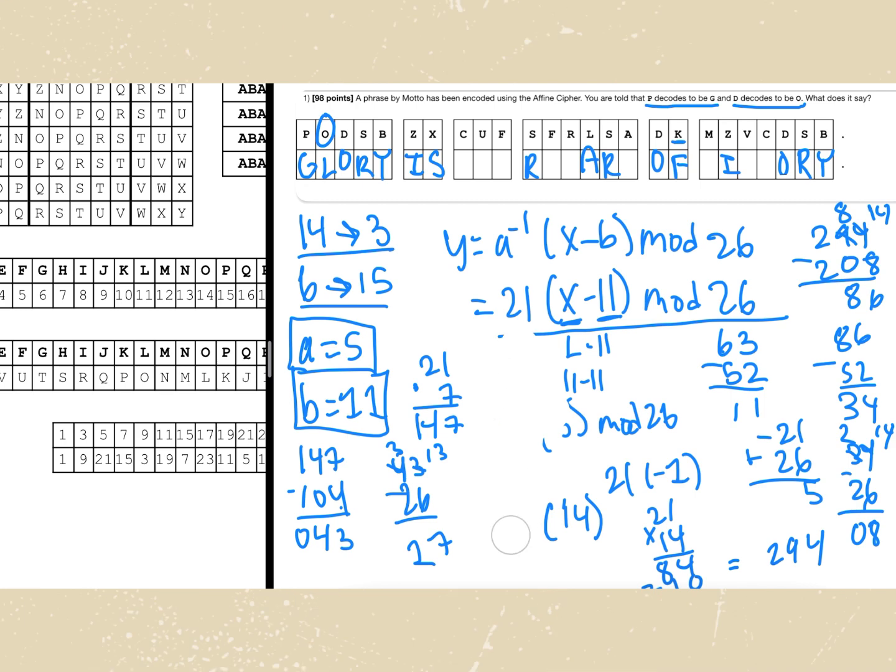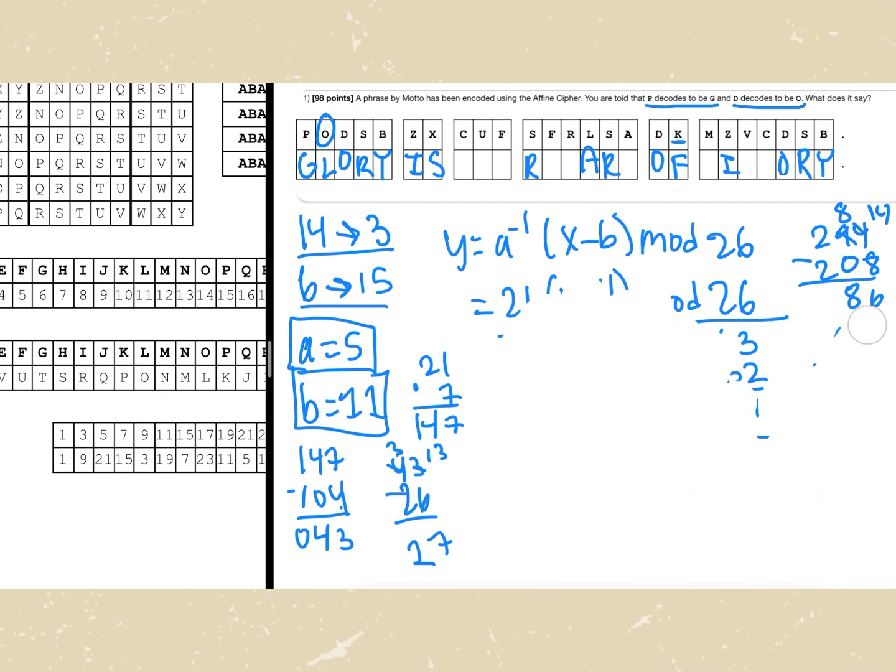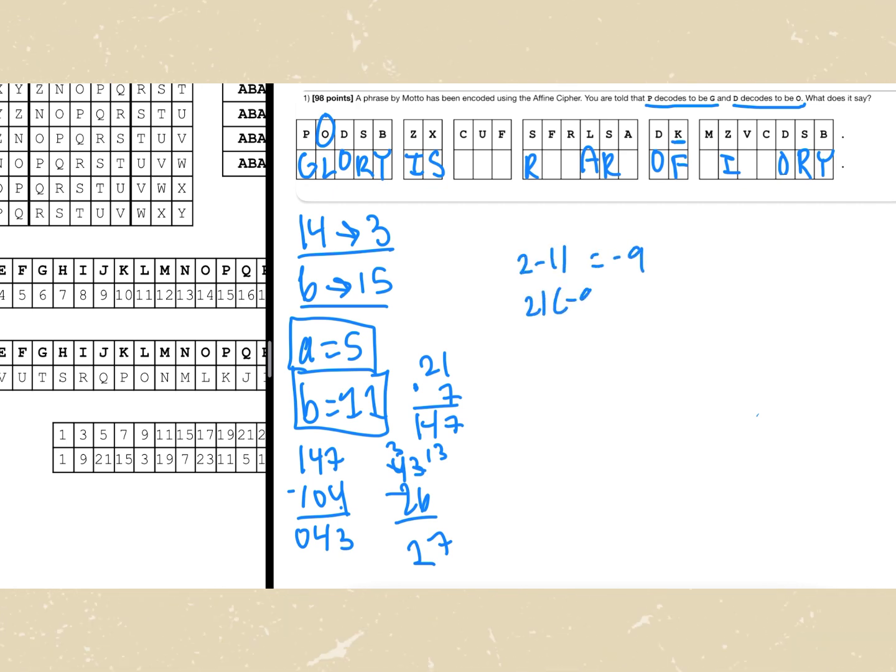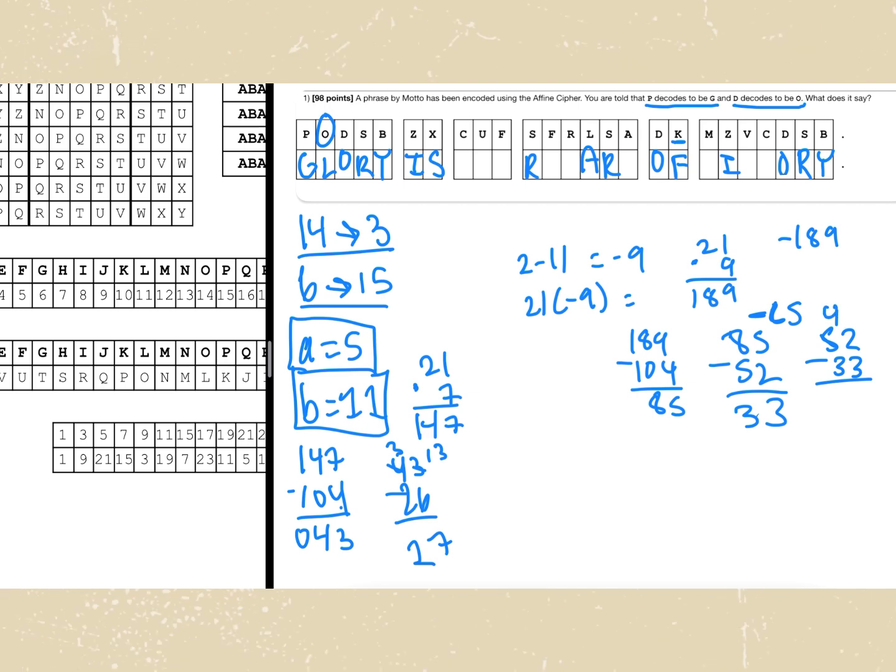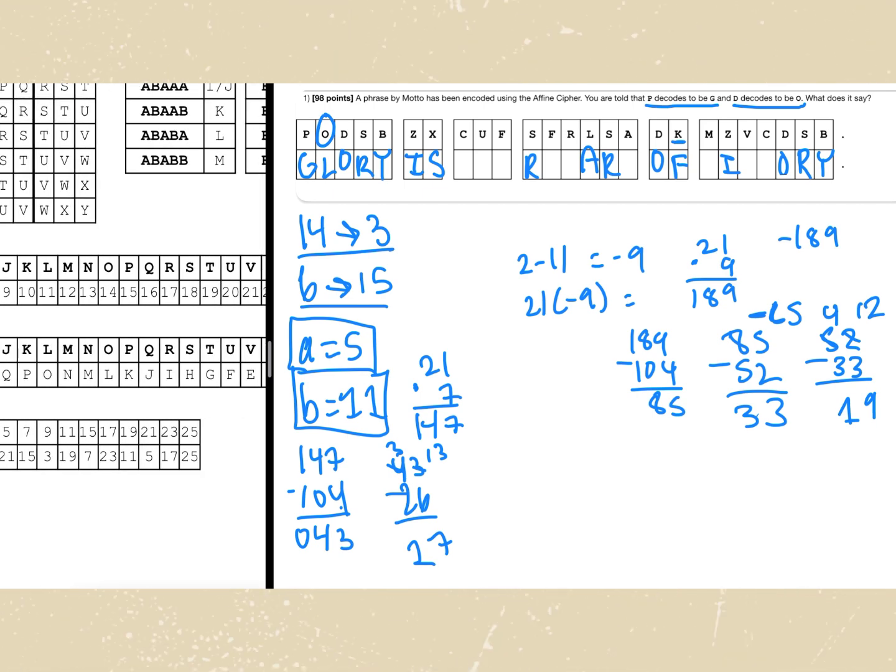And now we can solve for c. C is going to be 2 in our table. So 2 minus 11 which is negative 9. 21 times negative 9 is equal to negative 189. We can run a modulus on this now. So 189 minus 104 gives us 85 which is actually negative. 85 minus 52 gives us 33. So we have negative 33 plus another 52. So 52 minus 33 is equal to 19. We have 19. 19 is t. Glory is the. U to h we don't have. C to t right here.